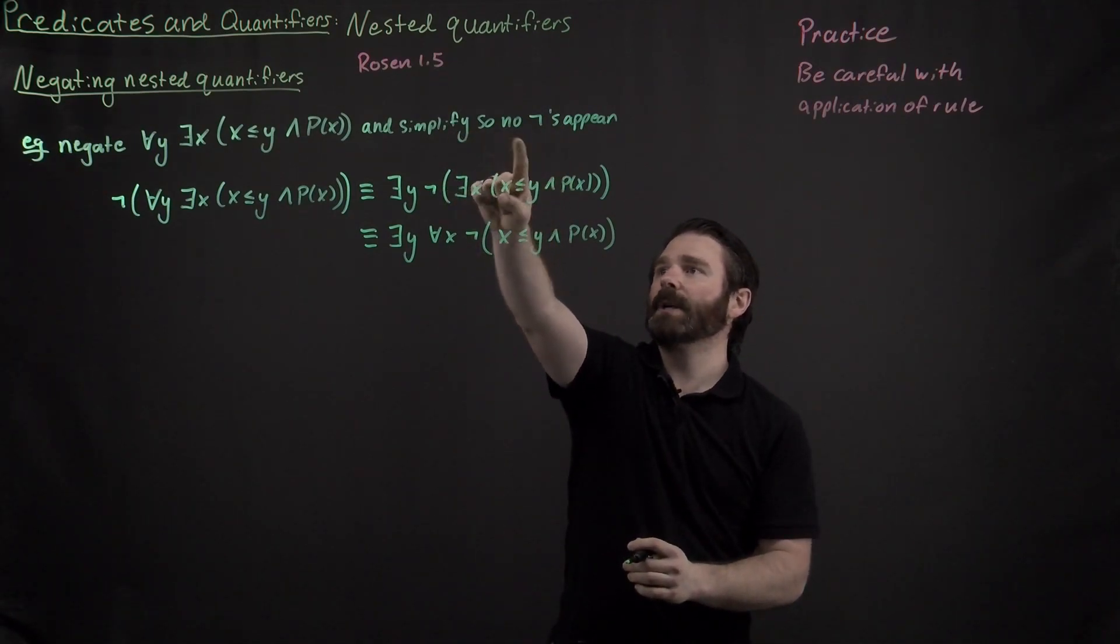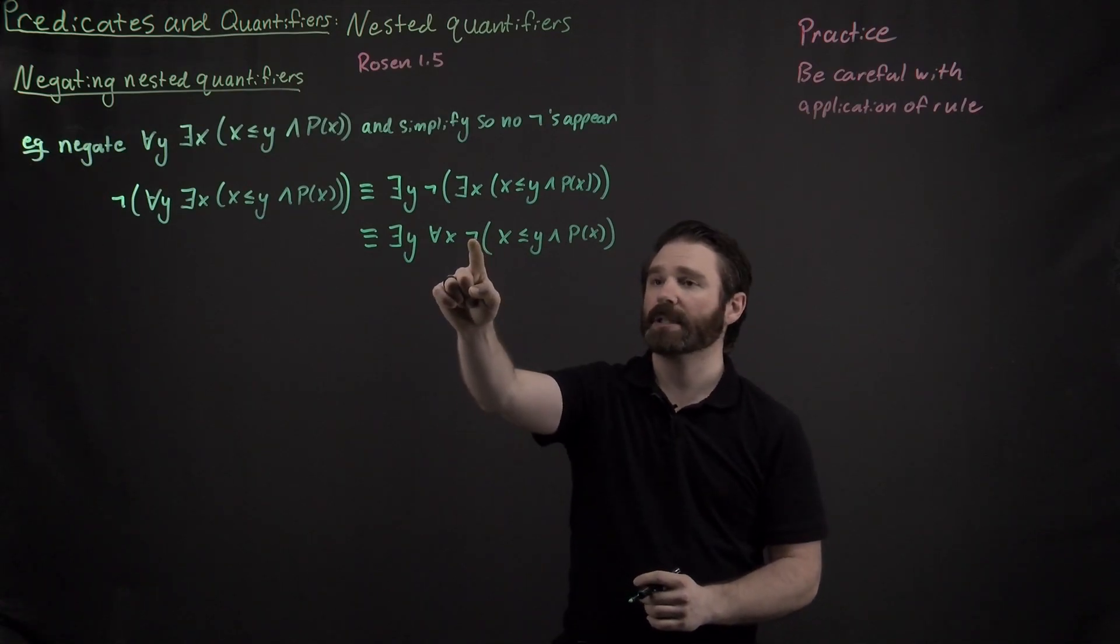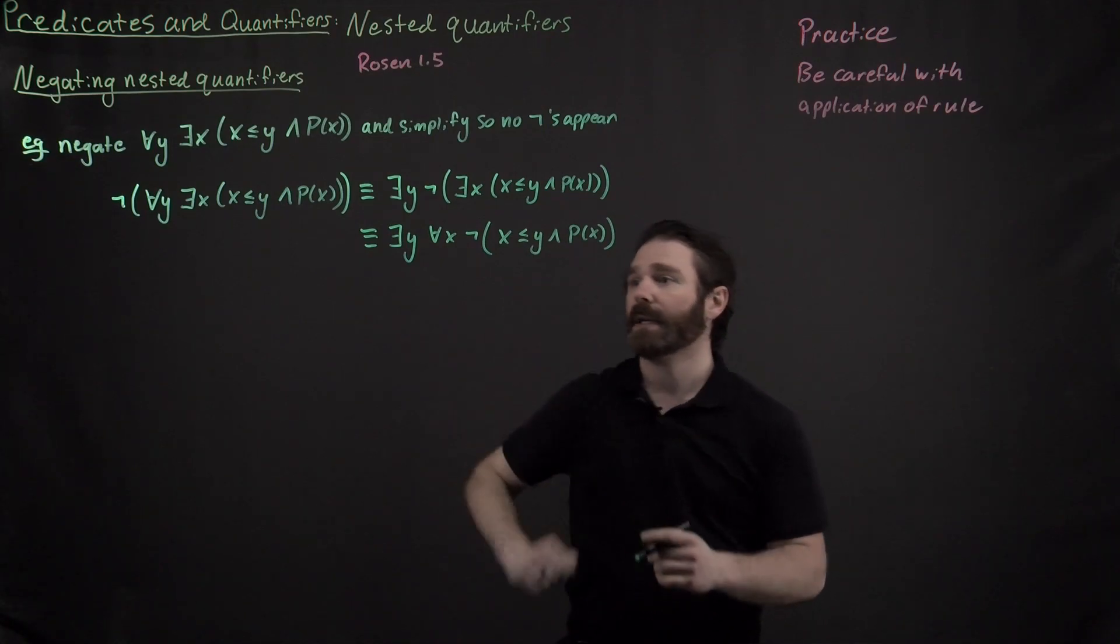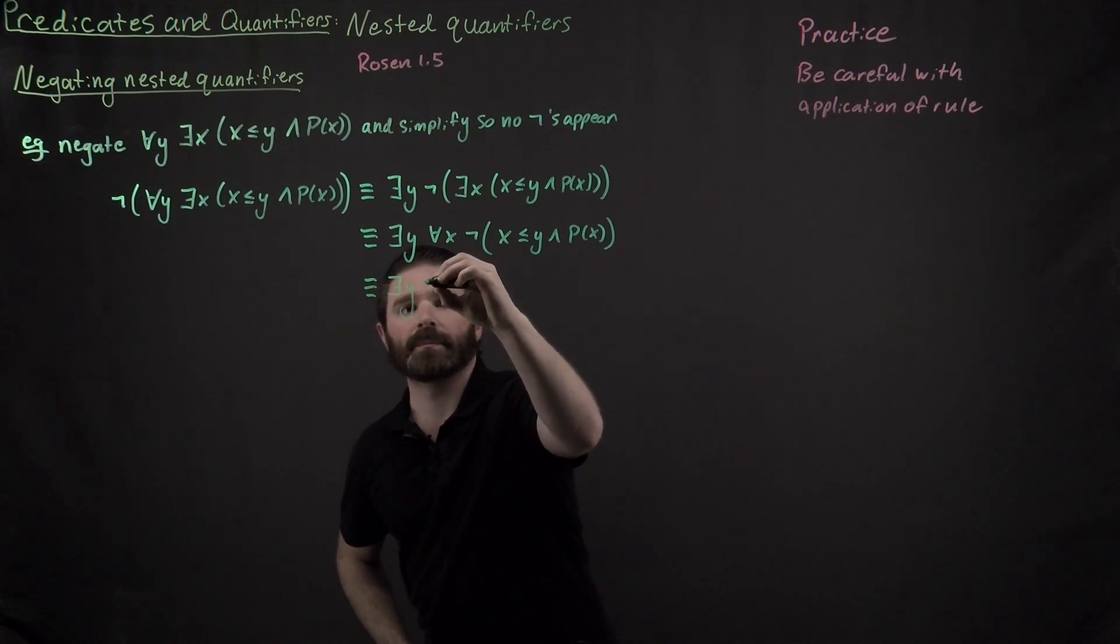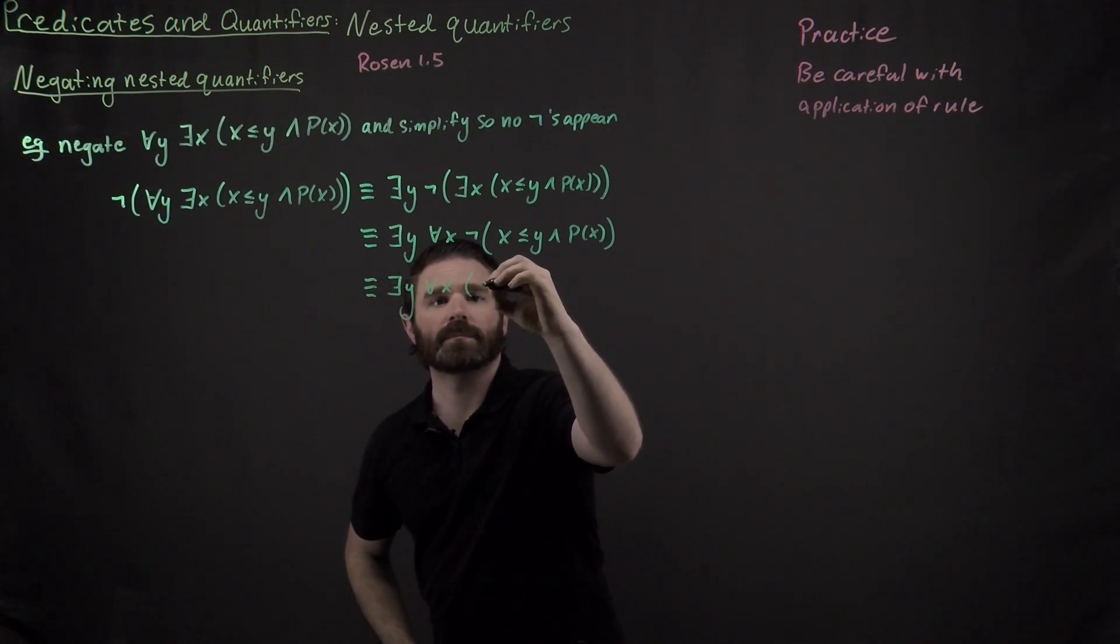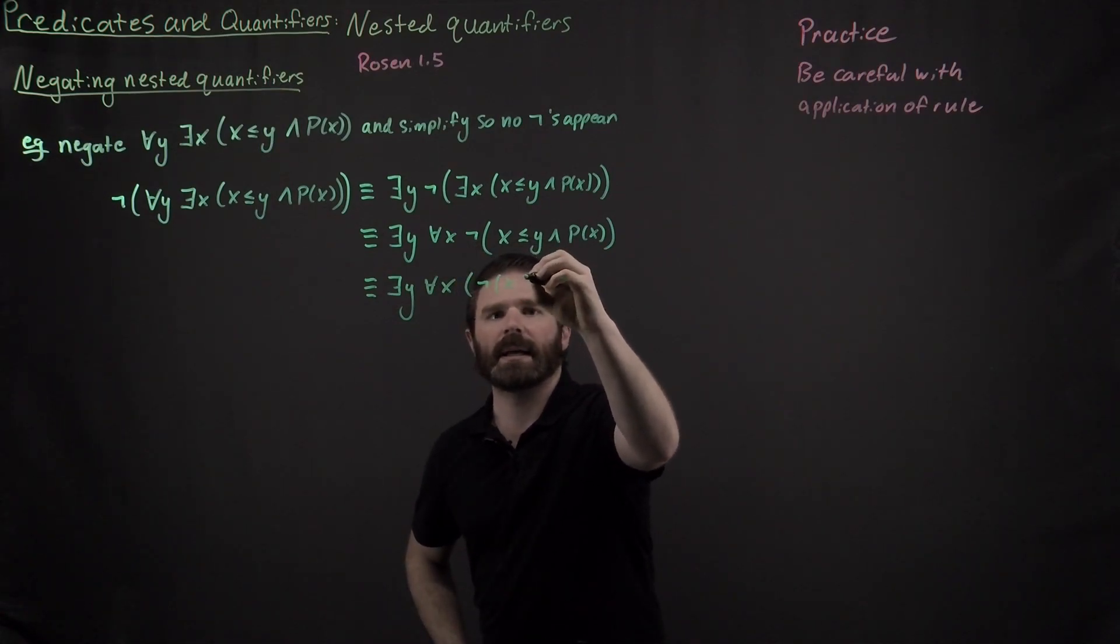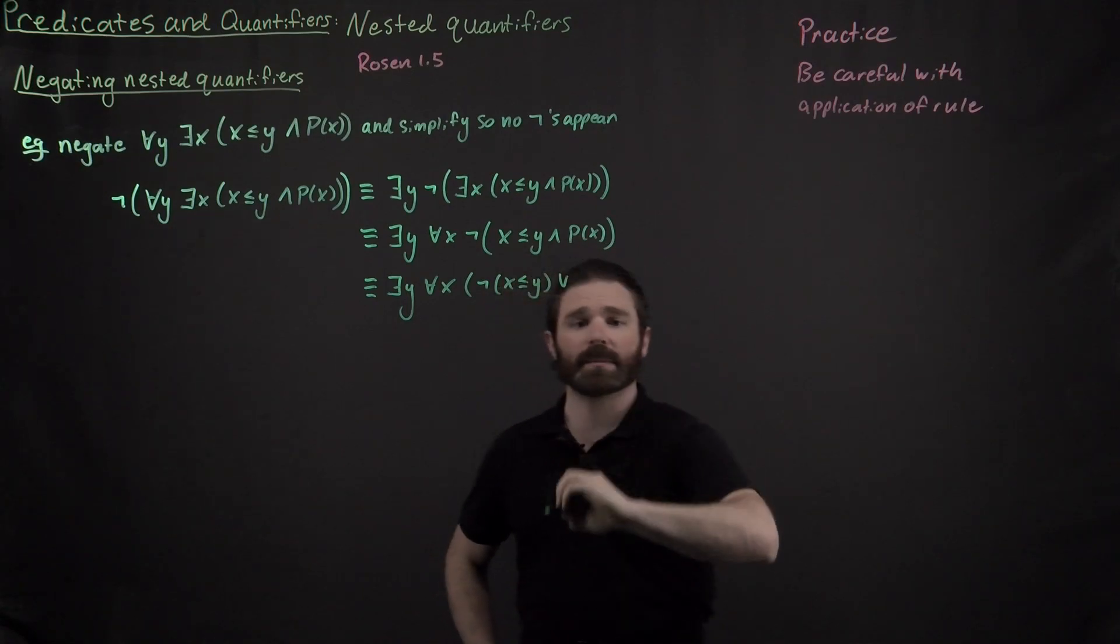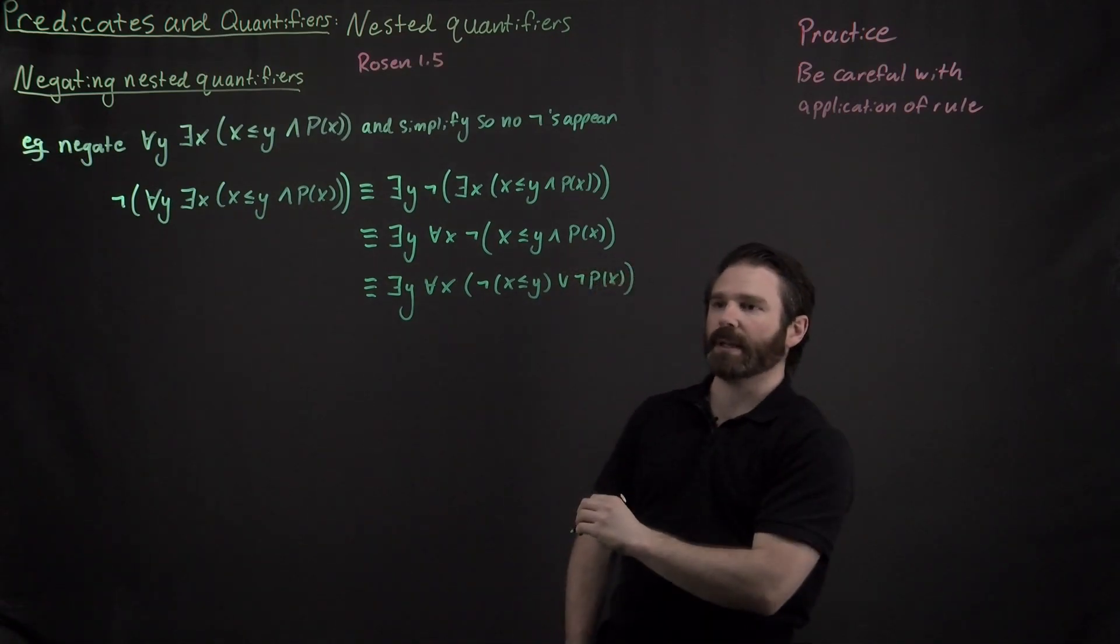Unfortunately, it asked me to simplify this so that no nots appear. So I'm going to have to apply DeMorgan's law again, but this time over a conjunctive right here over this and. So applying DeMorgan's law yet again, I'm going to get not x less than or equal to y, and I flip my operator so it becomes an or, and then I negate my p of x right there.